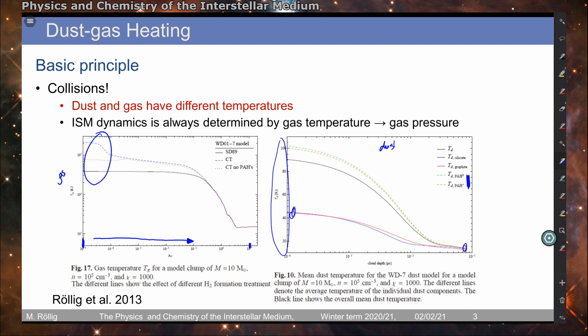The solid curves give the average between all these different dust components, allowing us to talk about something that is a dust temperature. Here this is the surface area weighted dust temperature, because it is argued that the surface of the dust particles is the important weighting factor — this is where the interaction between the gas and dust particles takes place. So the more surface we have, the more collisions these components will have with the gas particles, and more energy transfer — heating or cooling — will take place.